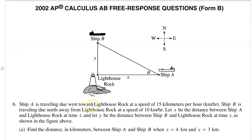Ship A is traveling due west toward Lighthouse Rock at a speed of 15 kilometers per hour. Ship B is traveling due north away from Lighthouse Rock at a speed of 10 kilometers per hour. Let X be the distance between Ship A and Lighthouse Rock at time T, and let Y be the distance between Ship B and Lighthouse Rock at time T. Part A: Find the distance in kilometers between Ship A and Ship B when X equals 4 and Y equals 3.